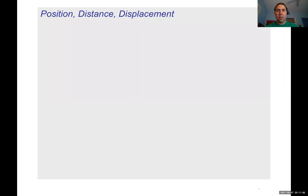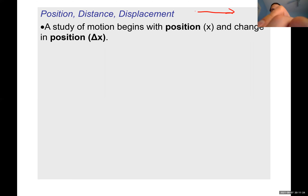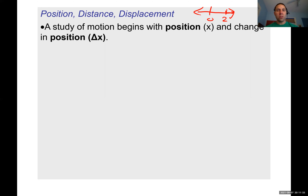Let's talk about position, distance, and displacement. Position is the location of an object with respect to the origin of the coordinate system. For example, if I'm two meters from the origin, my position is positive two meters. Change in position is written as delta x — the triangle symbol means 'change in.'